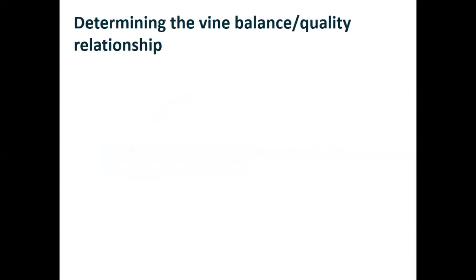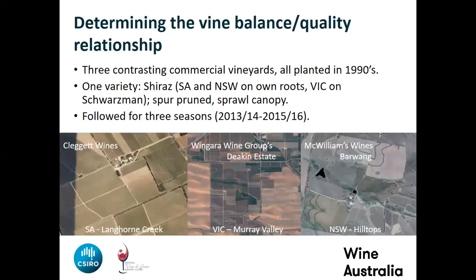To determine that relationship, we looked at a variety of vineyards and applied the same techniques to all of them, looking at whether we got different or consistent responses to our management techniques. We picked vineyards in three different regions and three states: Langhorne Creek in South Australia, Murrumbidgee Valley in Victoria, and Hilltops in New South Wales. All three were commercially managed, all growing Shiraz, all spur pruned with Australian sprawl canopy. We tracked them for three seasons, one after the other, to look for consistency in our results.